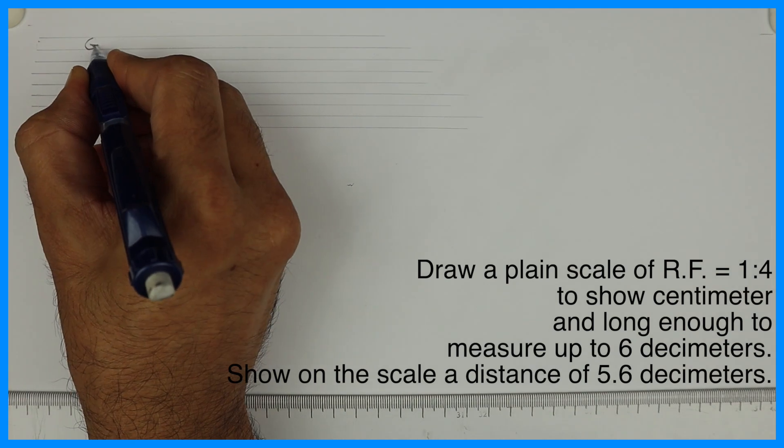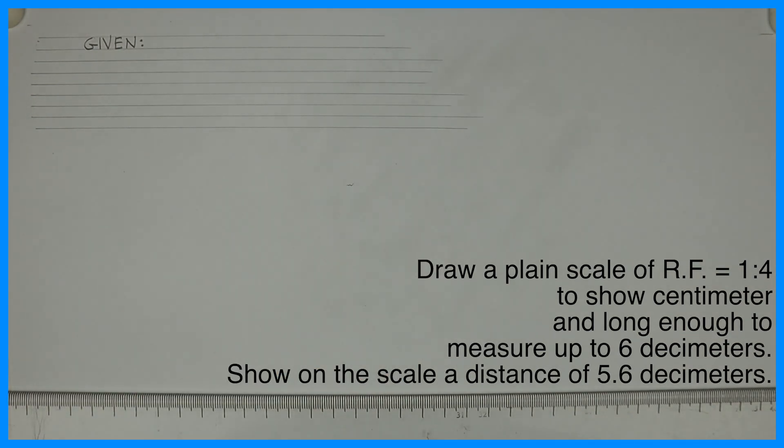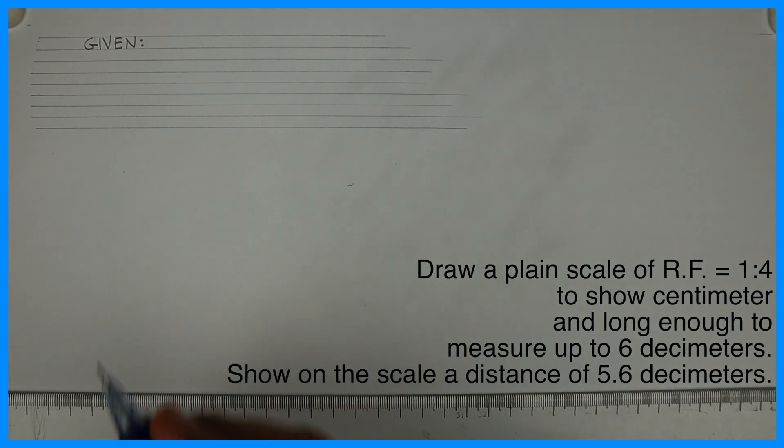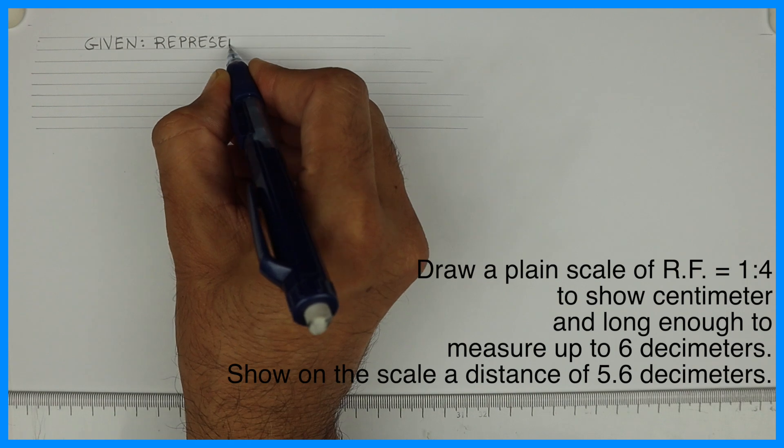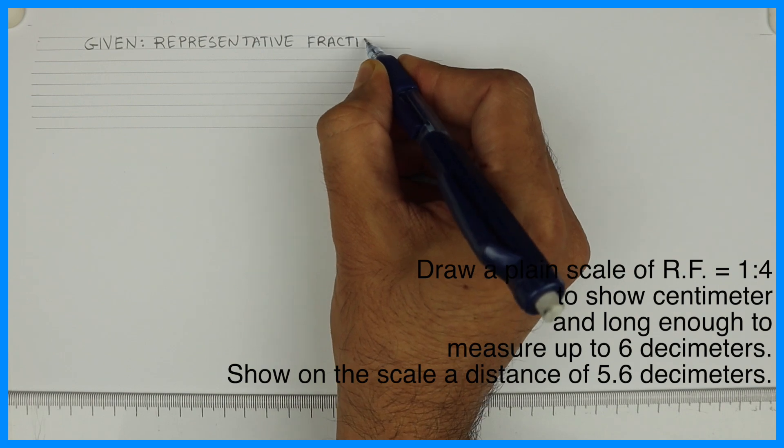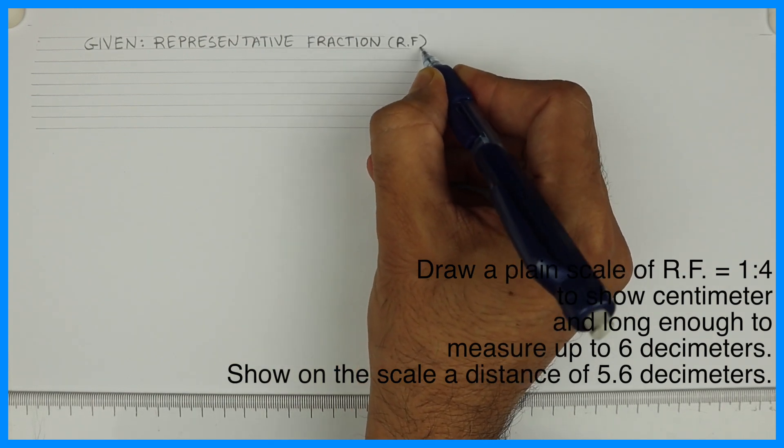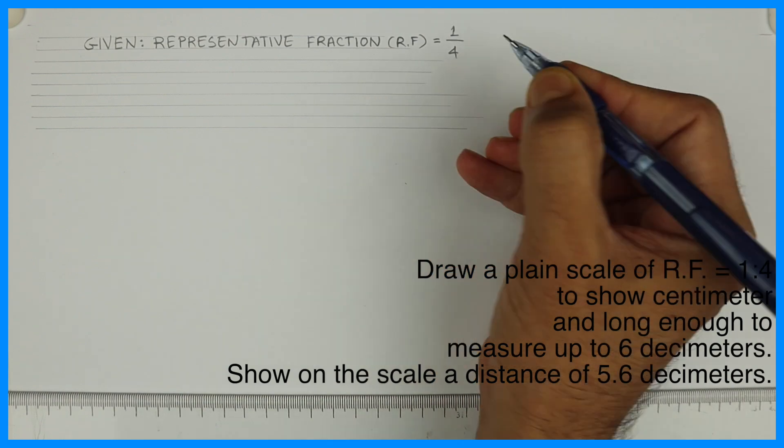Now see we have given data. The first thing is representative fraction that is RF. So we need to write in full form. So write representative fraction. It should be capital and write RF equals to 1 upon 4.